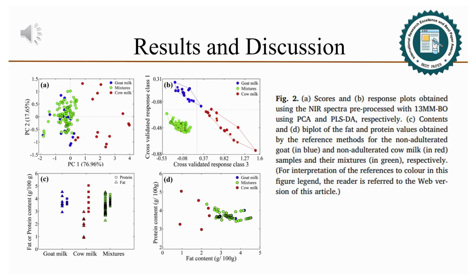An exploratory analysis was initially performed by PCA for screening the natural variability of the samples. The five first PCs account for more than 99% of the explained variance, PC1 and PC2 being responsible for 76.96% and 17.65% of the data variance, respectively.